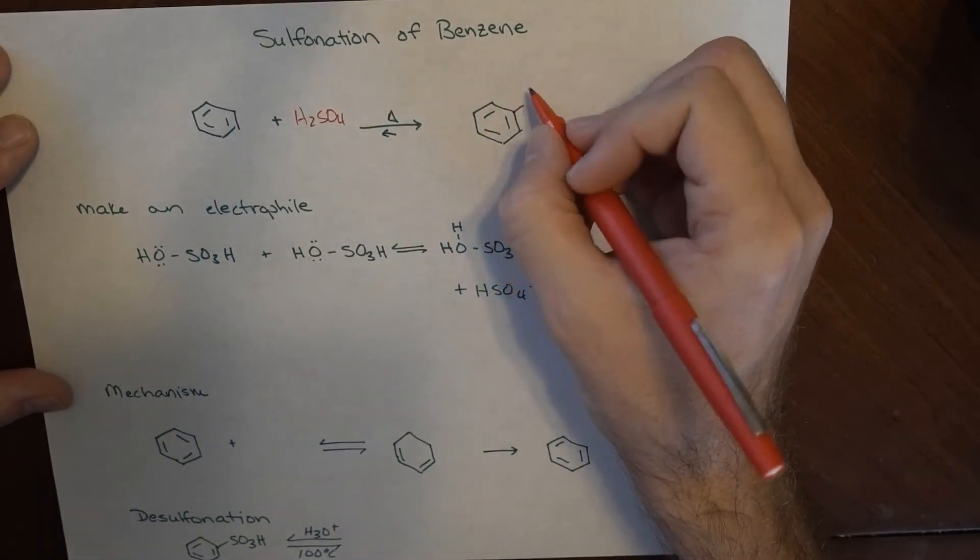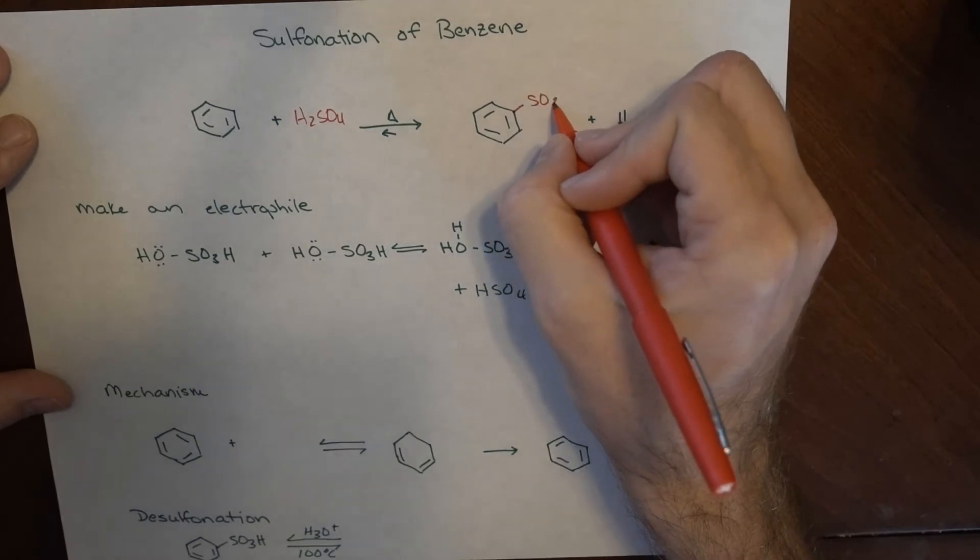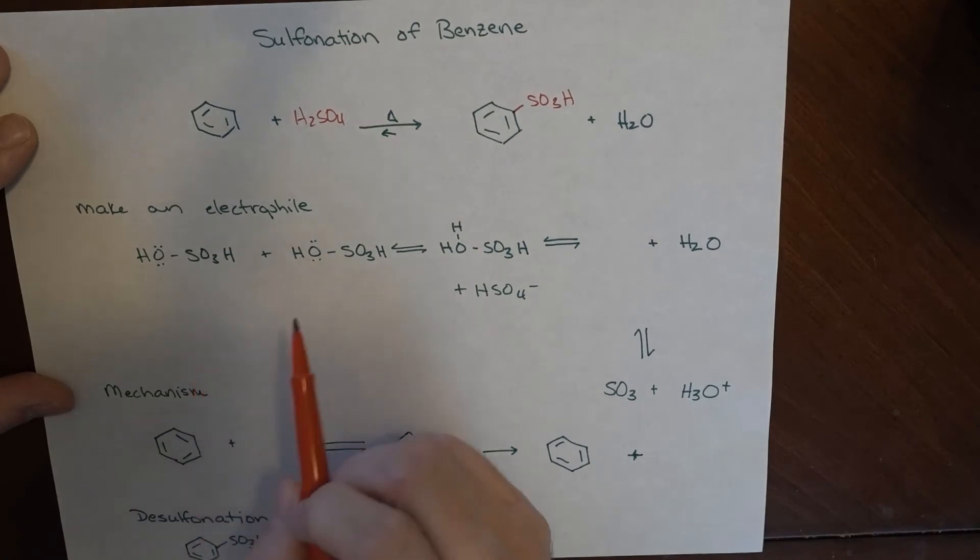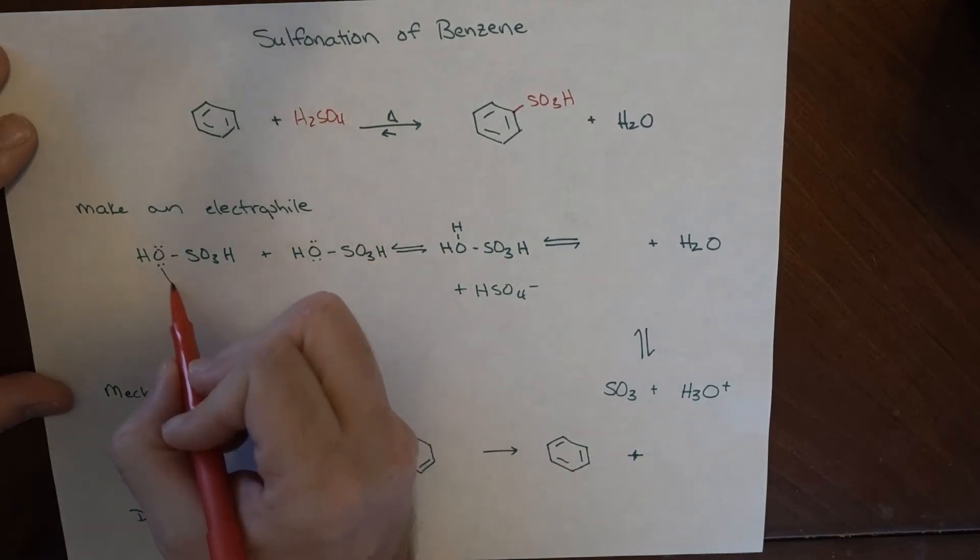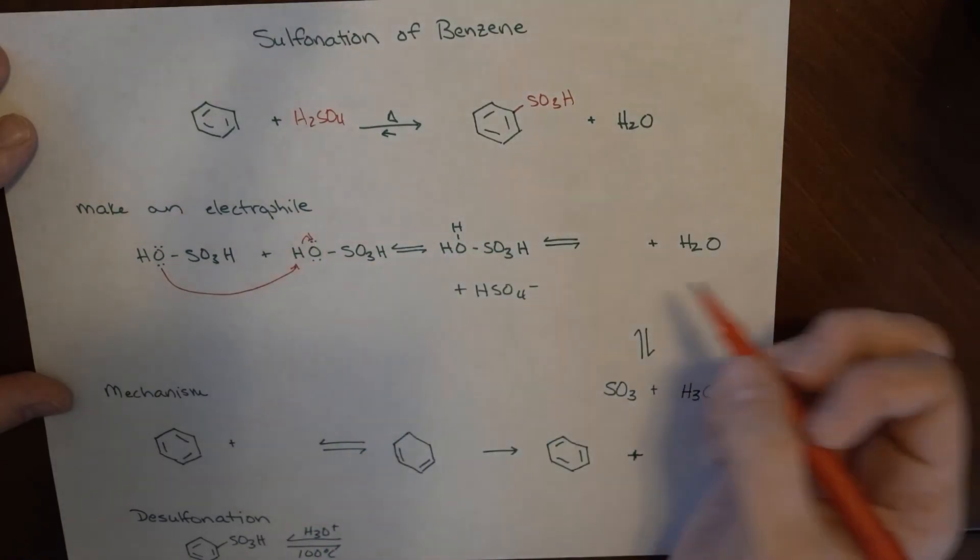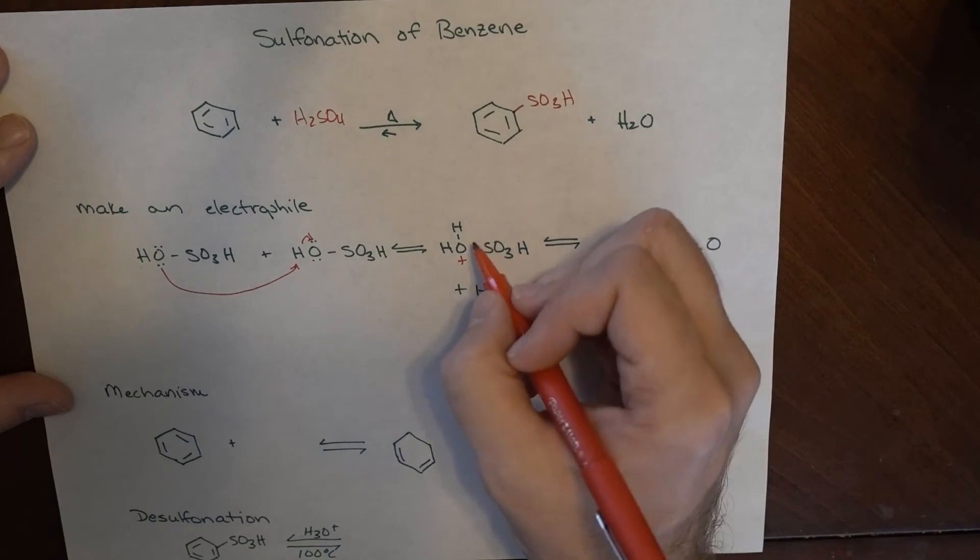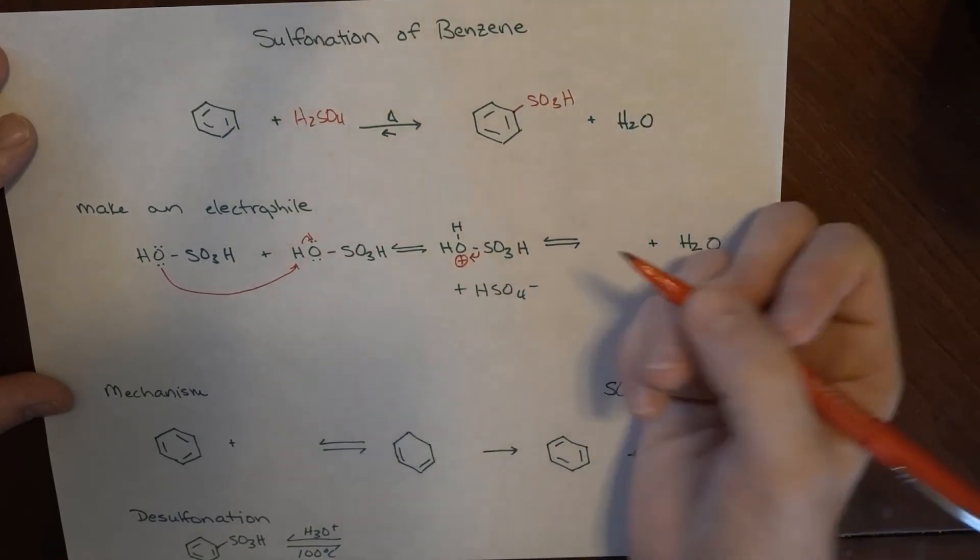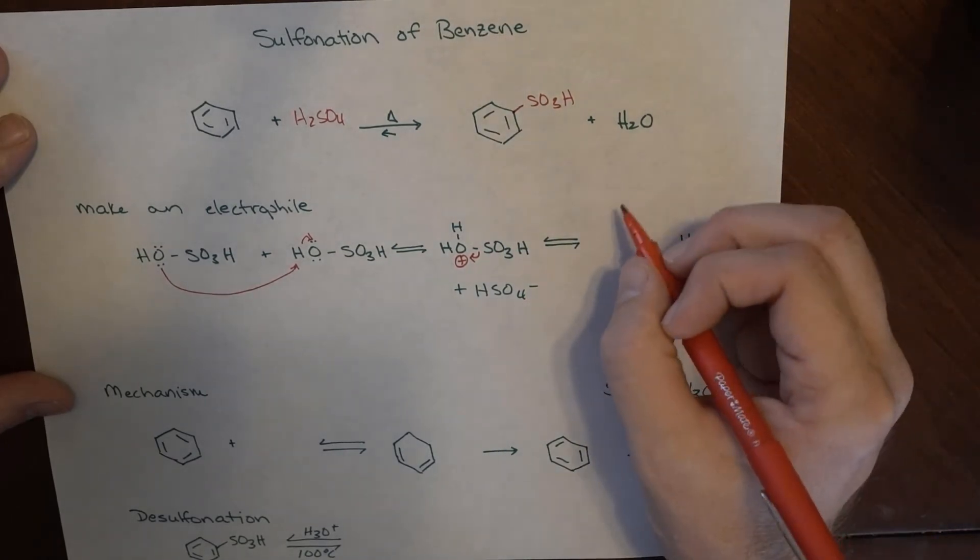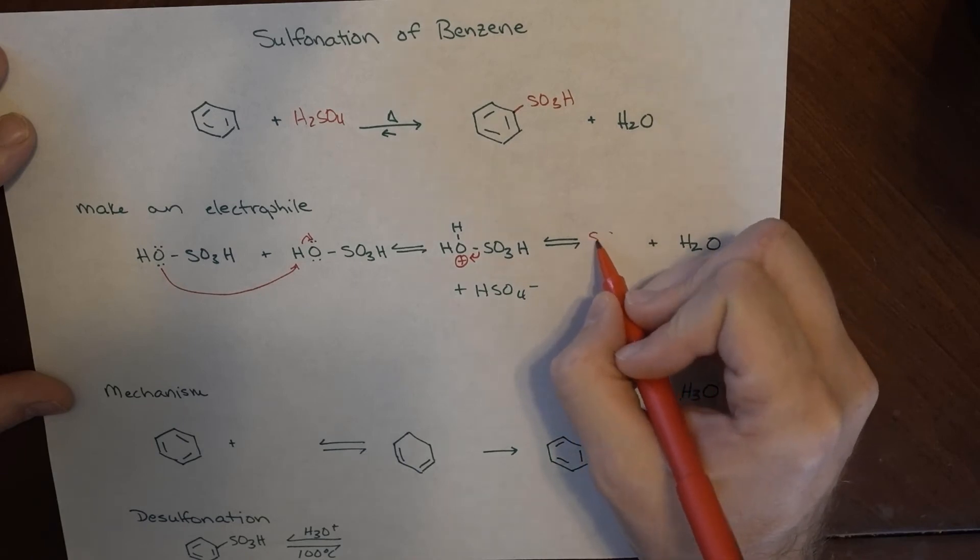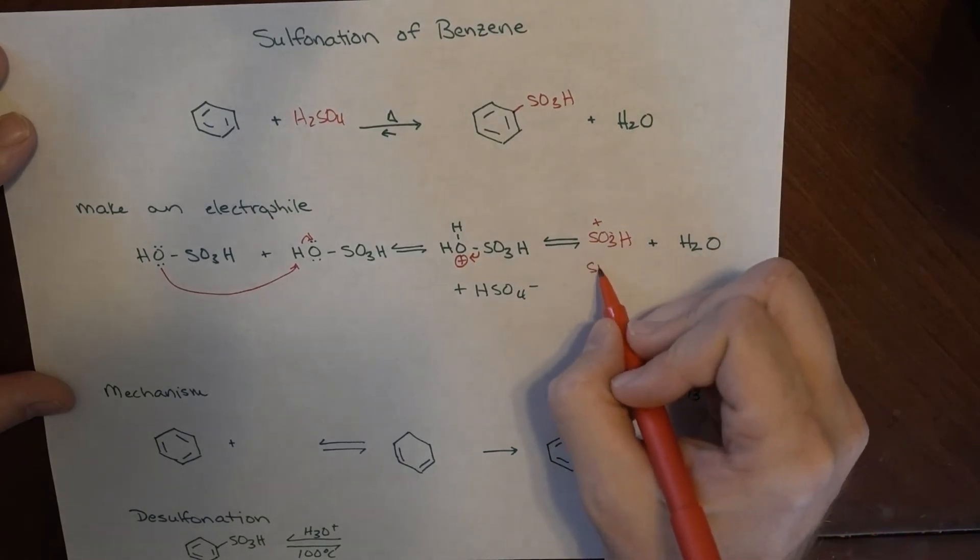Again, we need to form an electrophile, so the electrons from this grab onto this H, giving its electrons back over. We have this H2O, which is an amazing leaving group. Electrons are going to shift over from this, and what we're left with is our SO3H positively charged sulfonium ion.